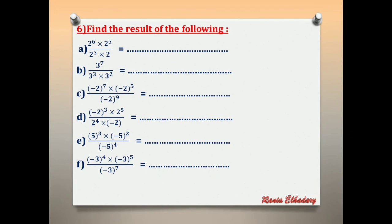Number 6: find the result. Letter A: 2^6 × 2^5 over 2^3 × 2^1. Same base — add powers in numerator and subtract in denominator: 2^(6+5−3−1) = 2^7 = 128.